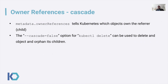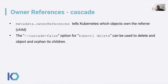We can see that there's a cascading operation by default when there's an owner reference from a child to a parent. When you delete the parent, the children are automatically deleted. This is called cascade. The default for cascade is true. The cascade option can be specified in the delete command and basically specifies whether or not it should orphan children.